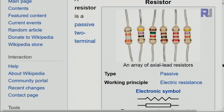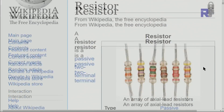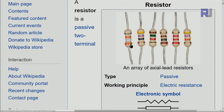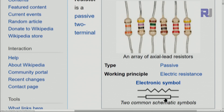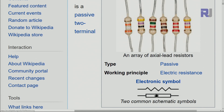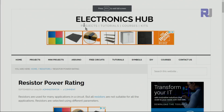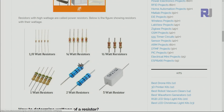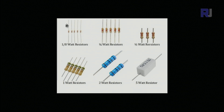A resistor is a passive two-terminal component that resists against current. It usually has four, and sometimes five, color stripes. There are two symbols: the European and the American. Resistors come in different sizes — for example, one-eighth watt, quarter watt, half watt, and five watts — and as the power rating increases, the physical size also increases.